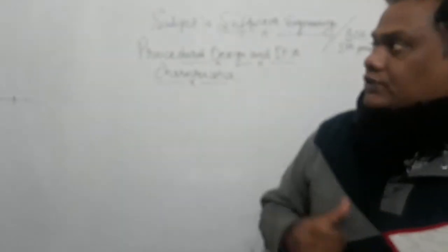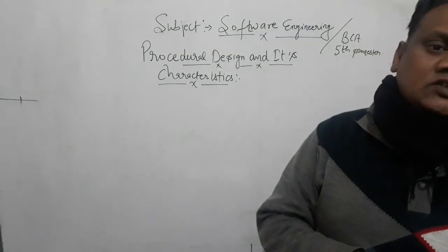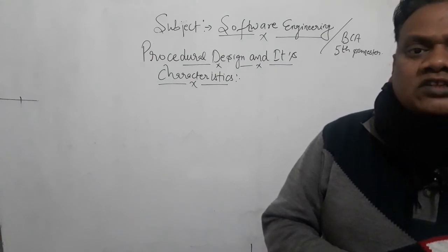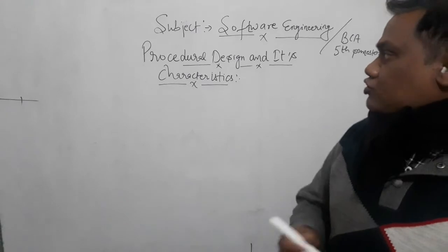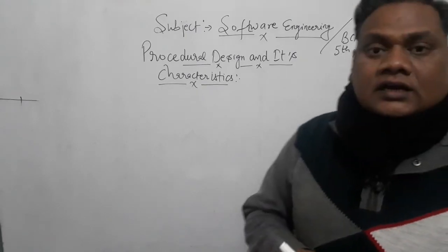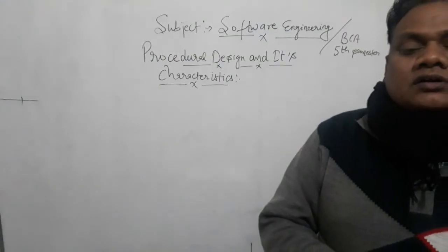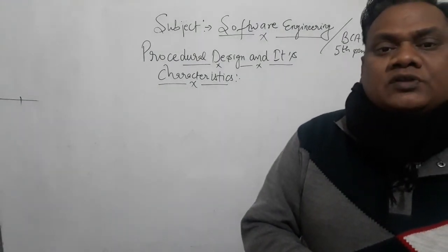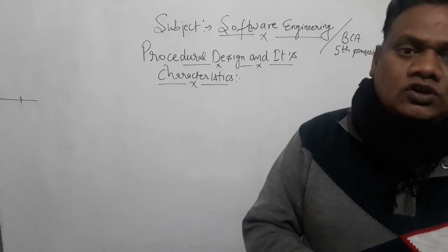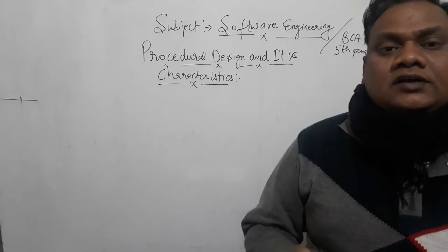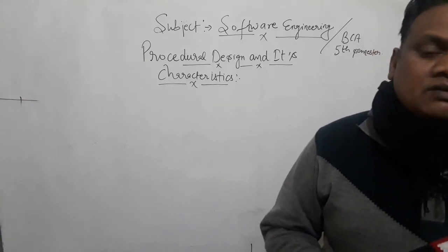Hello students, I hope all of you are doing well. Today our subject is Software Engineering for BCA 5th semester, and today our most important topic is Procedure Design and its Characteristics. Previously, we studied the IEEE Standard of Software Requirements Specifications, which was the topic completed in our YouTube online Software Engineering series for BCA 5th semester.